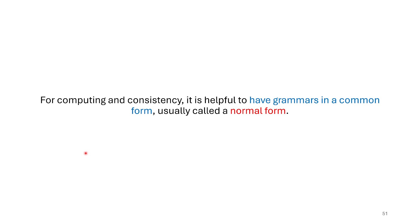Often when we're working with a context-free grammar, it will be convenient for us to have it in a normal form. There are typically many different grammars that you might be able to come up with for your language, and because there are so many different kinds, it might be hard to tell if two grammars are the same, or hard to work with a grammar in the form that it's in. So it can be convenient to have them in some consistent form — we usually call these a normal form.